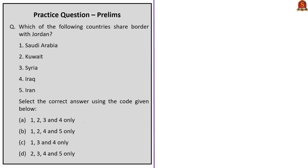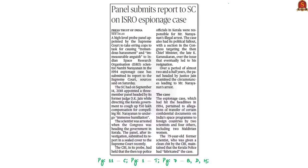After World War II, Jordan became independent in 1946. In this analysis we saw the location of Jordan, its political history from ancient times, and its independence in 1946.